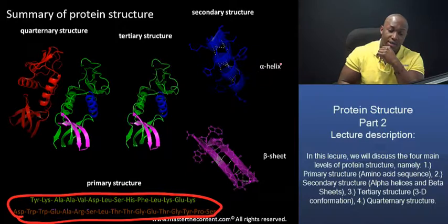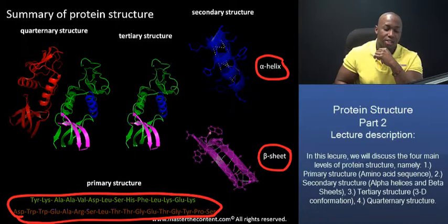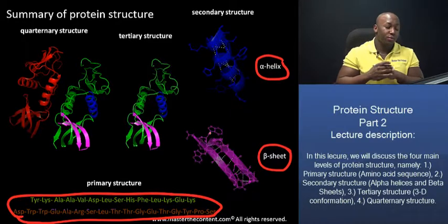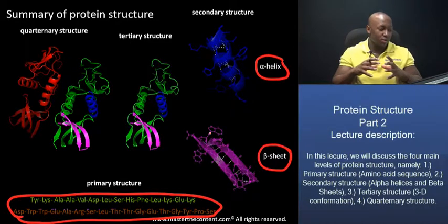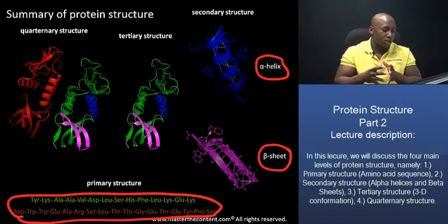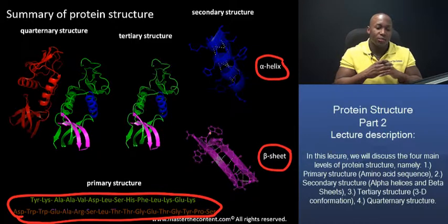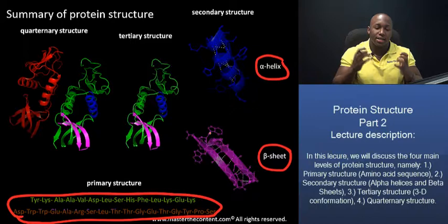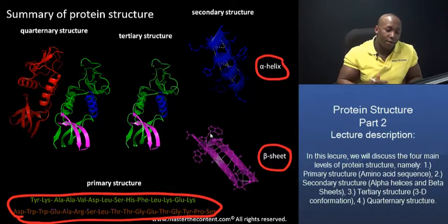The secondary structure, represented by the diagram of an alpha helix as well as the diagram of a beta pleated sheet, refers to the three-dimensional folding or conformation — the coiling or folding patterns that result from hydrogen bonding in the backbone of a polypeptide chain.